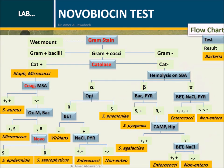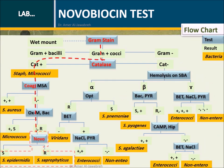Flowchart: The flowchart shows that gram stain, catalase, and coagulase tests are prerequisites for the Novobiocin test. Tested bacteria should be gram-positive cocci, catalase positive, and coagulase negative.